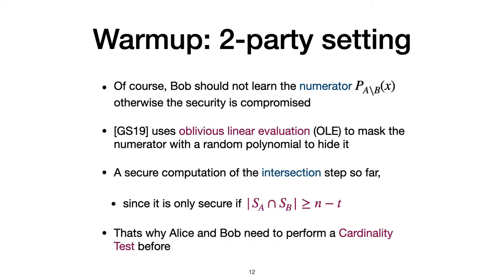Of course, Bob should not learn the numerator Pa minus b, otherwise the security is compromised. As Bob would also learn the whole set of Alice, which is forbidden. In GS19, they use oblivious linear evaluation, or OLE, to mask the numerator with a random polynomial to hide the information.